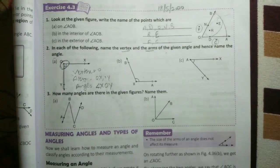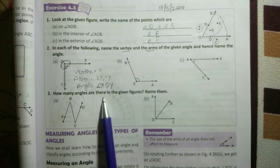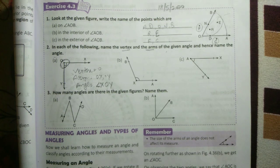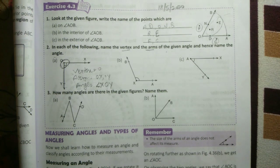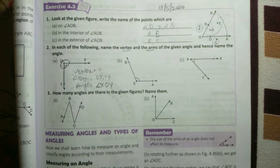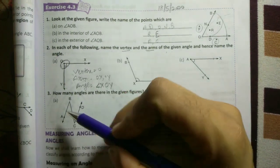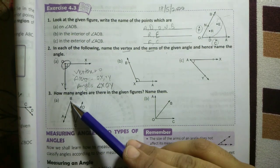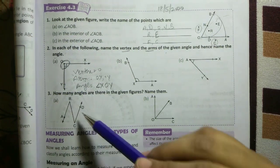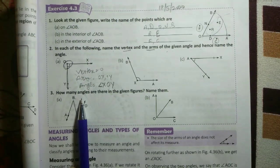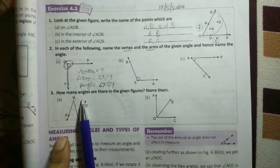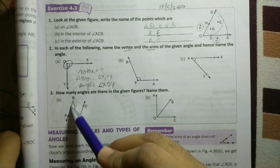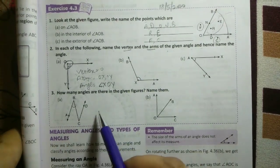In question number third: how many angles are there in the given figure? Name them. Students, see in this figure, here what they give you is angle ABC. What we do in the figure, we hide them. So angle ABC.